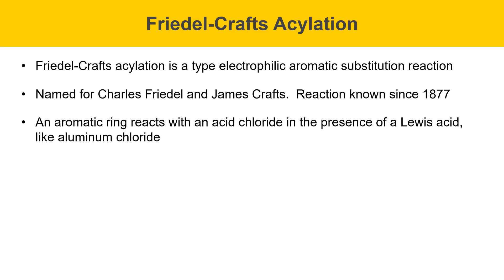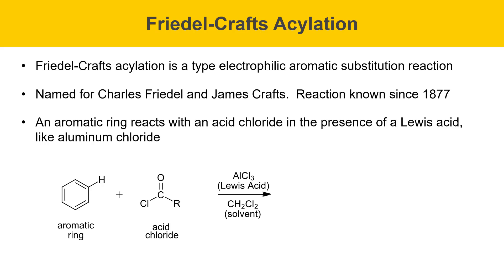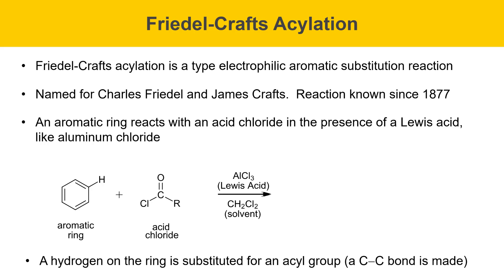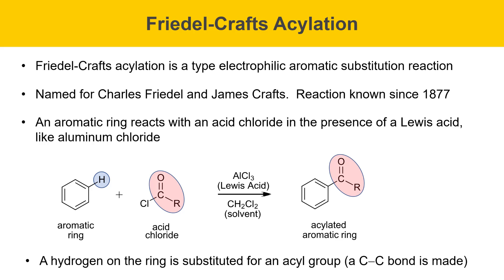An aromatic ring like benzene reacts with an acid chloride in the presence of a Lewis acid like aluminum chloride, and there'll be a solvent like, for example, dichloromethane. A hydrogen atom on the ring is substituted for an acyl group, and a new C-C bond is made. In this example, it's going to be the H on the aromatic ring shown in blue, substituting for the acyl group shown in pink in the acid chloride. The result is that the ring is acylated, and hydrogen chloride is produced as a co-product.